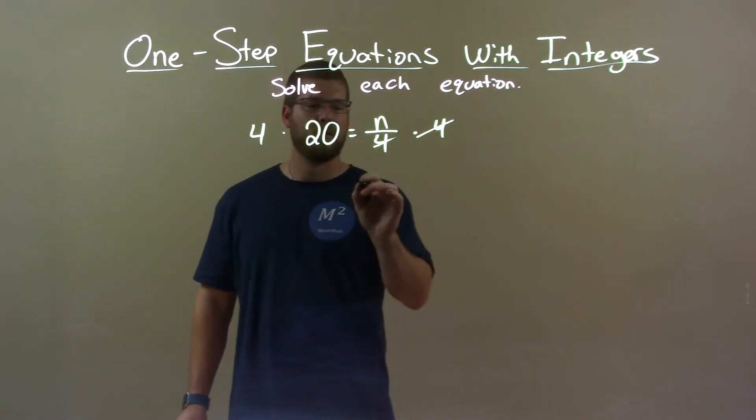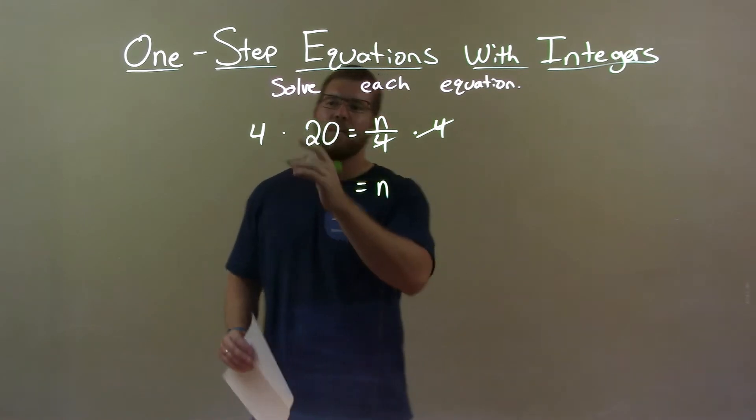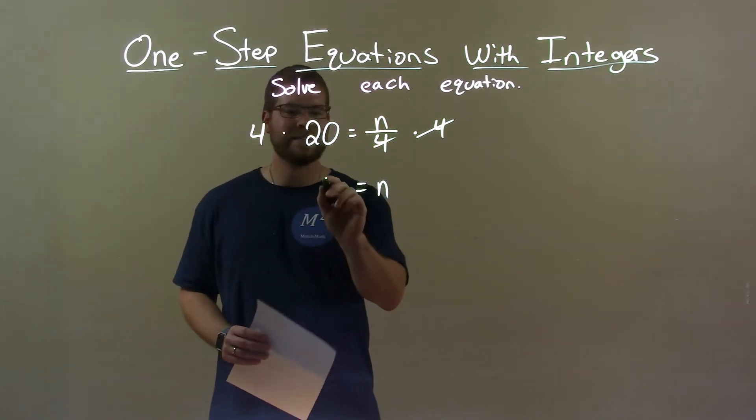This cancels out the 4 on the right, giving me n by itself but now I have 4 times 20 on the left. 4 times 20 is 80.